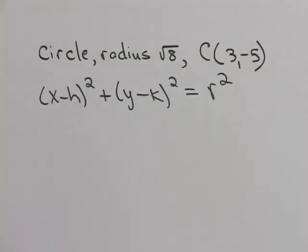Let's find the standard form of an equation of a circle given a radius of the square root of 8 and a center of (3, -5).